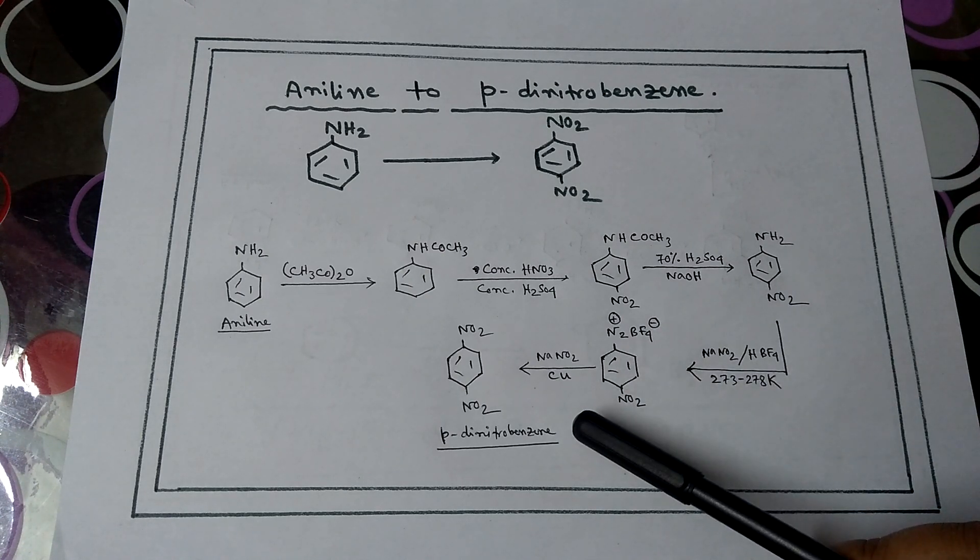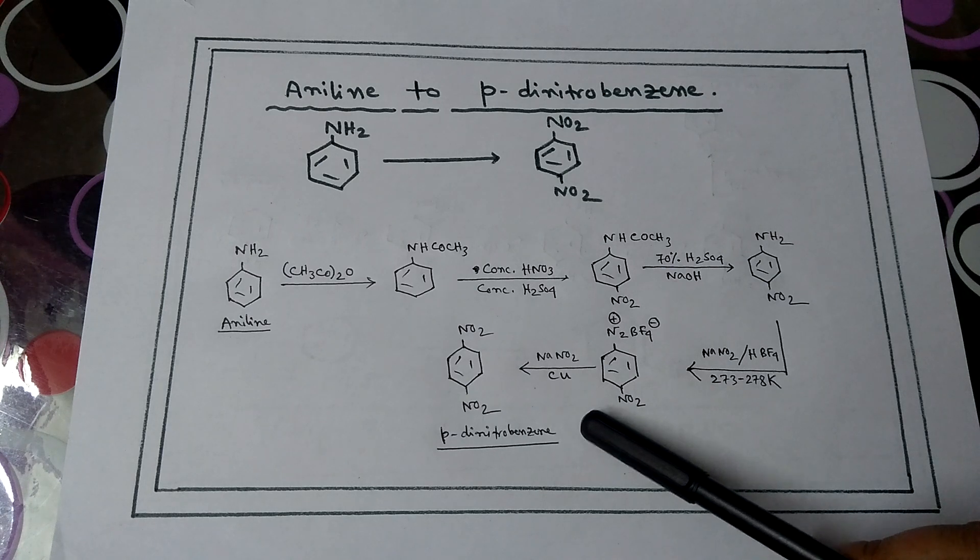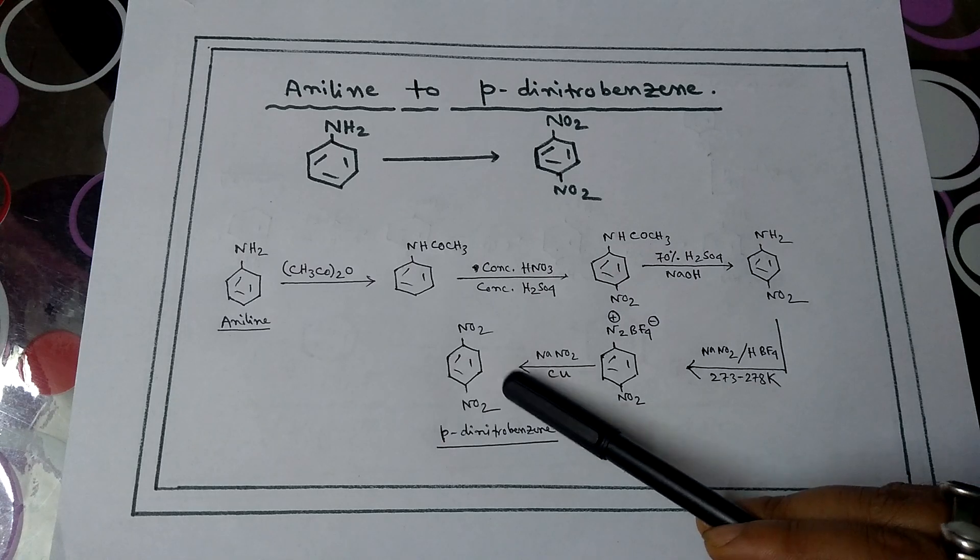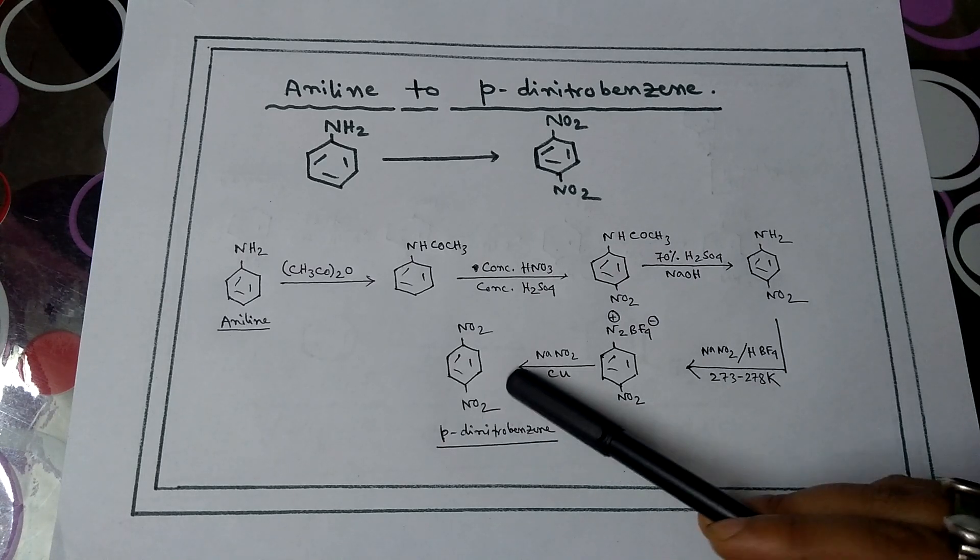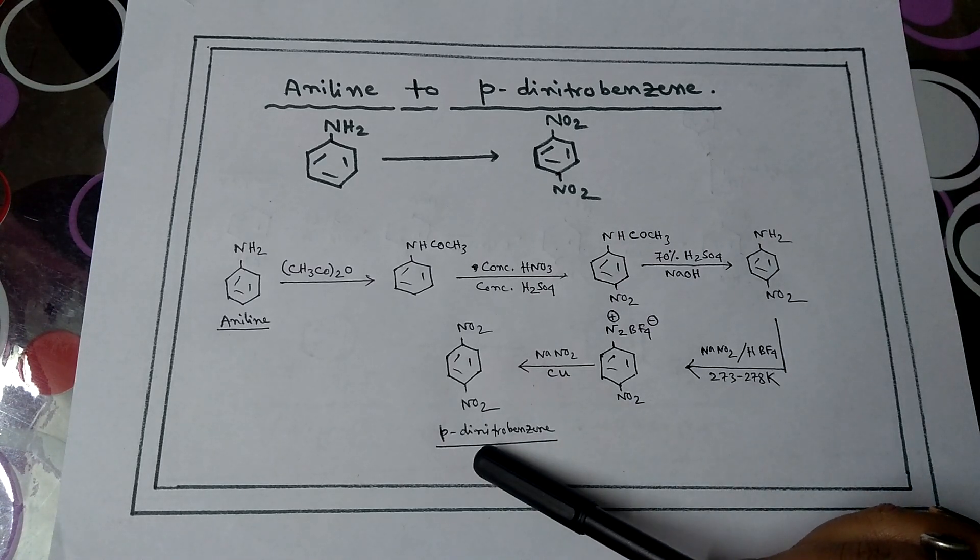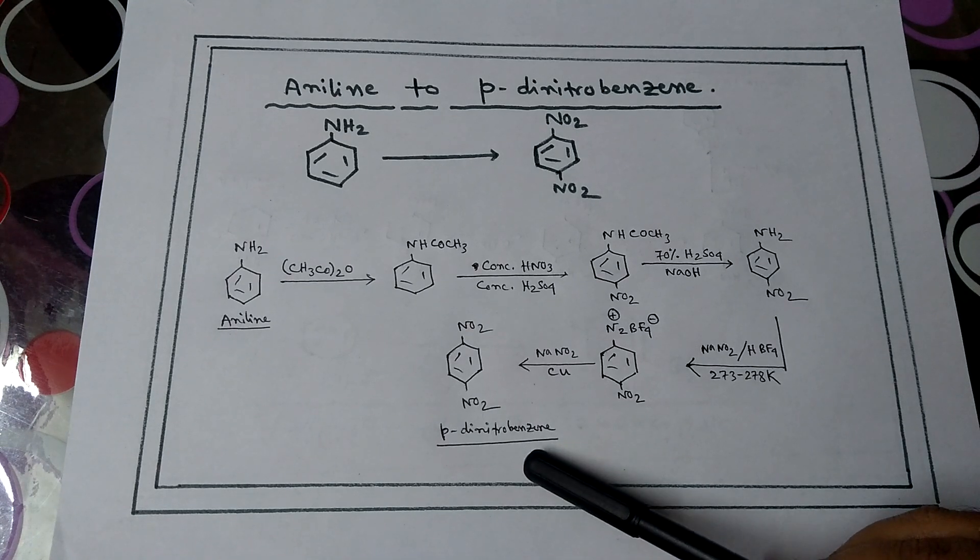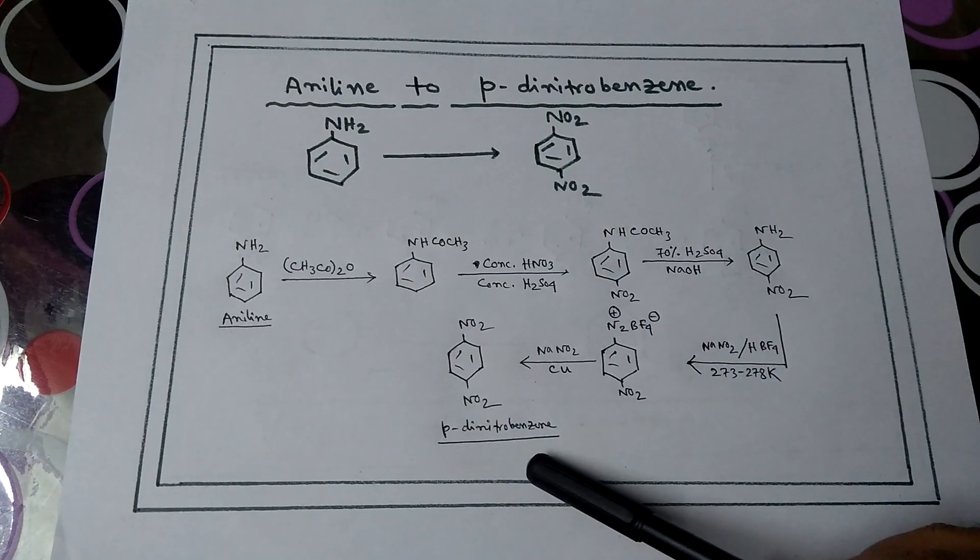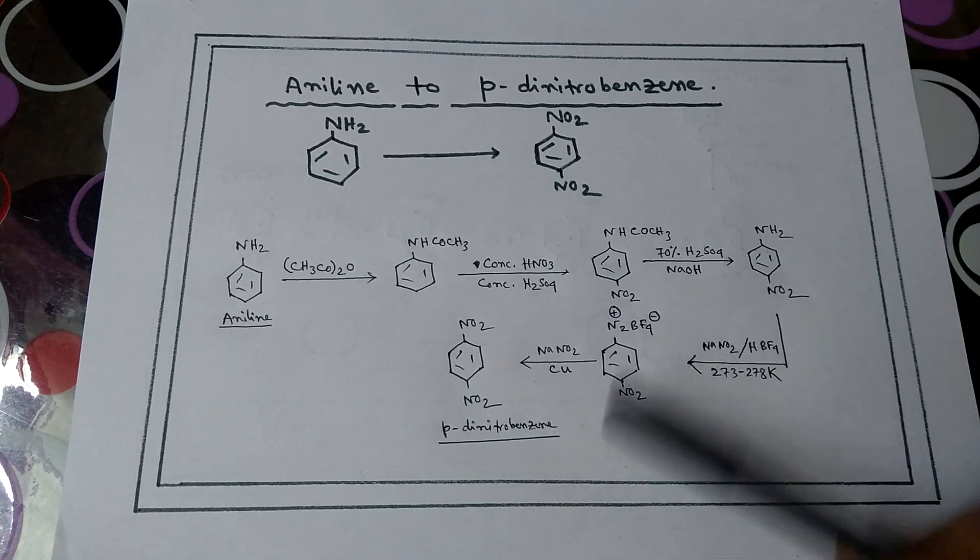Then NaNO2 with Cu is added to form NO2 at the para position. So it is paradinitrobenzene. Aniline to paradinitrobenzene is formed through this pathway.